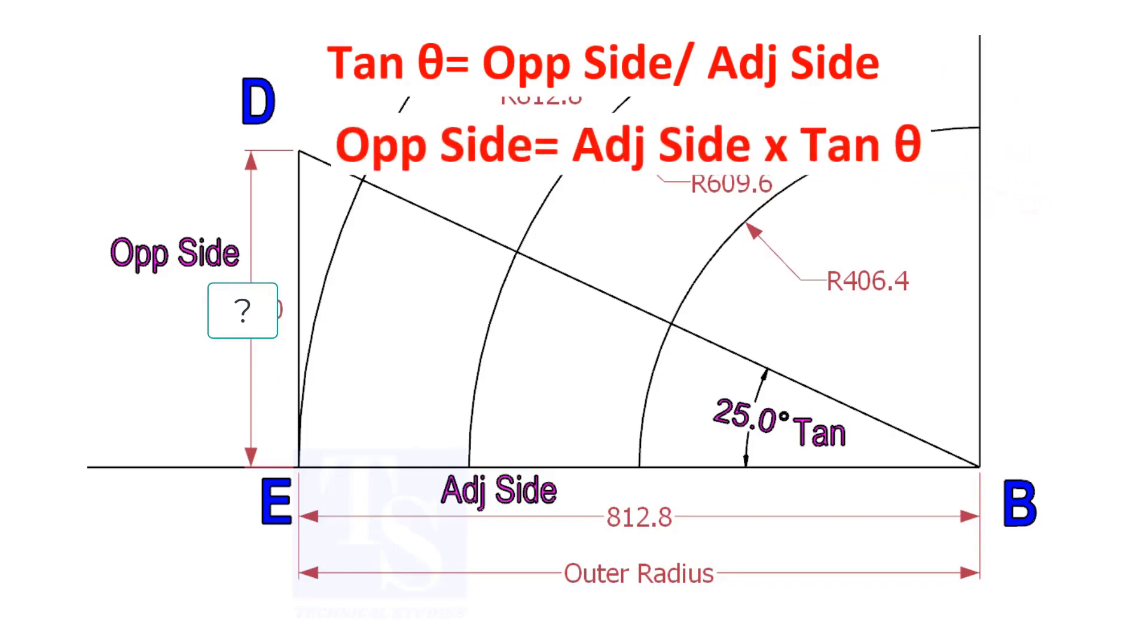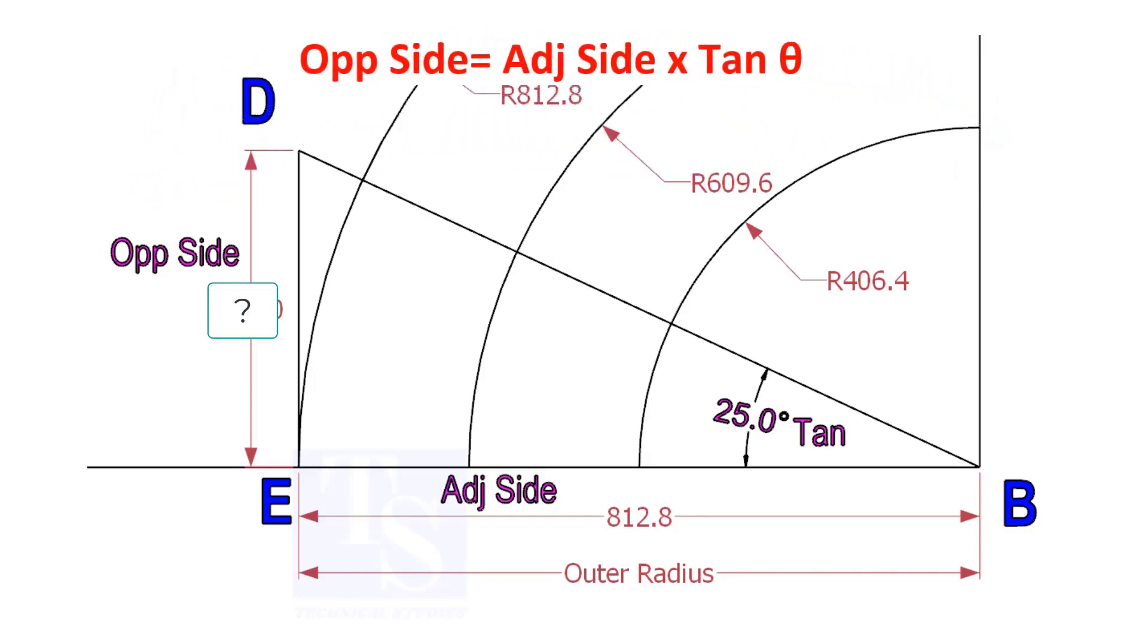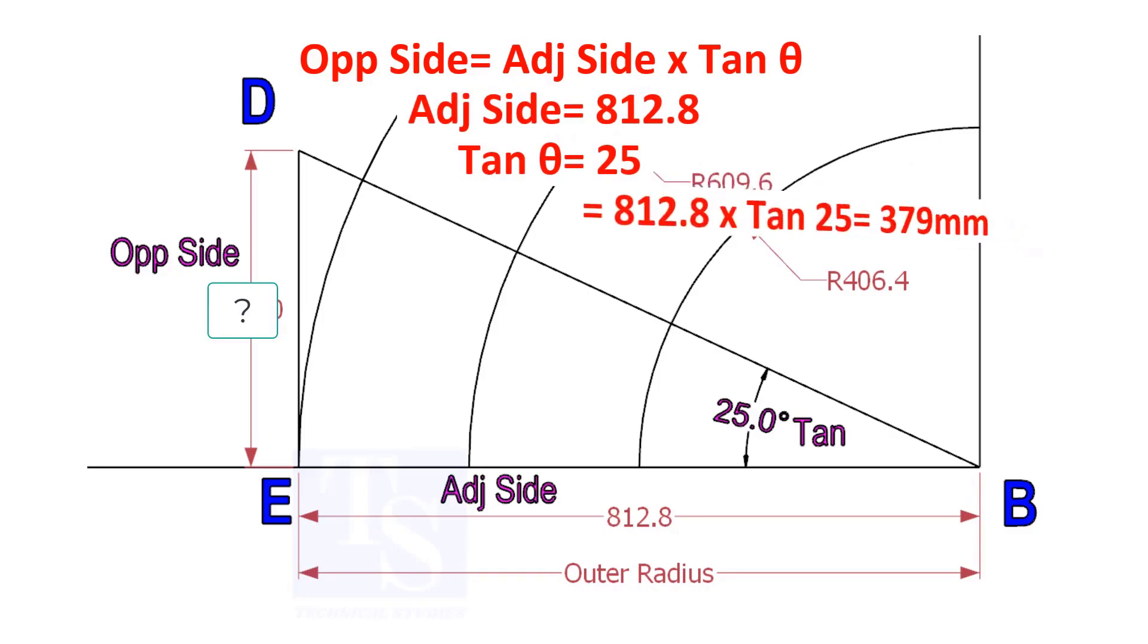Opposite side equals adjacent side multiplied by tan-theta. 812.8 into tan-25 equals 379 millimeters.